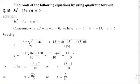5x² - 13x + 6 = 0. So, first of all, by comparing the coefficients.